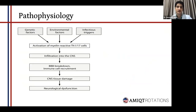Regarding the pathophysiology, genetic factors, environmental factors, as well as infectious triggers play a role. Initially, these factors activate myelin-reactive Th1 and Th17 cells — respectively activating macrophages as well as neutrophils. These cells then infiltrate the central nervous system, leading to elevated levels of B cells, plasma cells, as well as T lymphocytes. It's the B cells that are responsible for disrupting the blood-brain barrier, leading to widening of endothelial gap junctions, which allows T lymphocytes to directly enter the CNS and target the myelin-repairing cells, or oligodendrocytes. This further leads to CNS tissue damage and worsening neurological dysfunction.